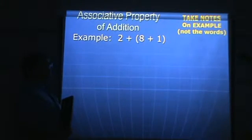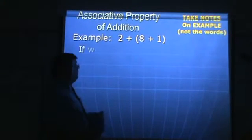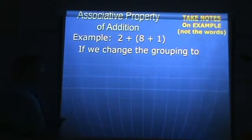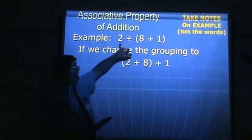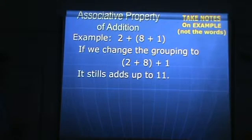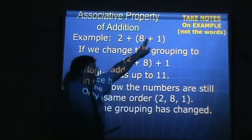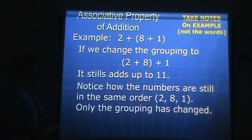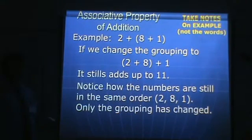Here we have the associative property of addition. The associative property is all about grouping. Here I have the 8 plus 1 group, which means we add those first. If we change the grouping and group 2 plus 8 first, does the result change? 8 plus 1 is 9 — add the 2, you get 11. 2 plus 8 is 10 — add the 1, you get 11. It still adds up to 11. Notice how the numbers 2, 8, 1 stayed in the same order — the only thing that changed was what was inside the grouping symbols. The associative property is all about what's inside the grouping changing.